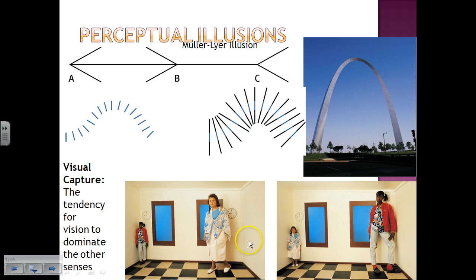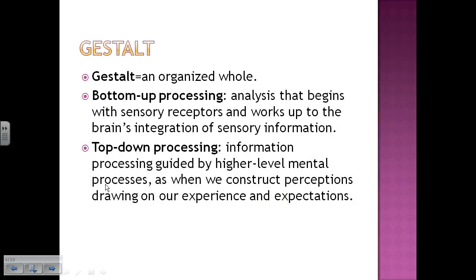Last, down here, this is demonstrating something called the Ames room where depending on where the people are standing they appear to change size even though they actually don't. All of these examples here are examples of visual capture, that vision takes precedence over any of our other senses. One other example of this was the McGurk effect where we watched that video and we were watching him move his mouth and it looked like he was saying 'fa' instead of 'bah' even though he was saying 'bah' the whole time. When we saw his mouth change we perceived a different sound. So that would be visual capture.